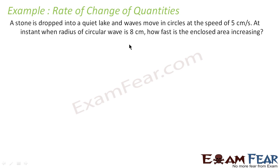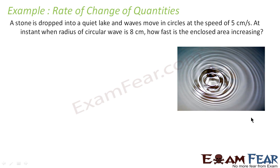Let's take one more example on rate of change of quantities. A stone is dropped in a quiet lake and a wave moves in a circle at a speed of 5 centimeters per second. At the instant when the radius of the circular wave is 8 centimeters, we have to find how fast the area is changing. Visualize this: somebody drops a stone in a pond and waves spread out in circular shapes.